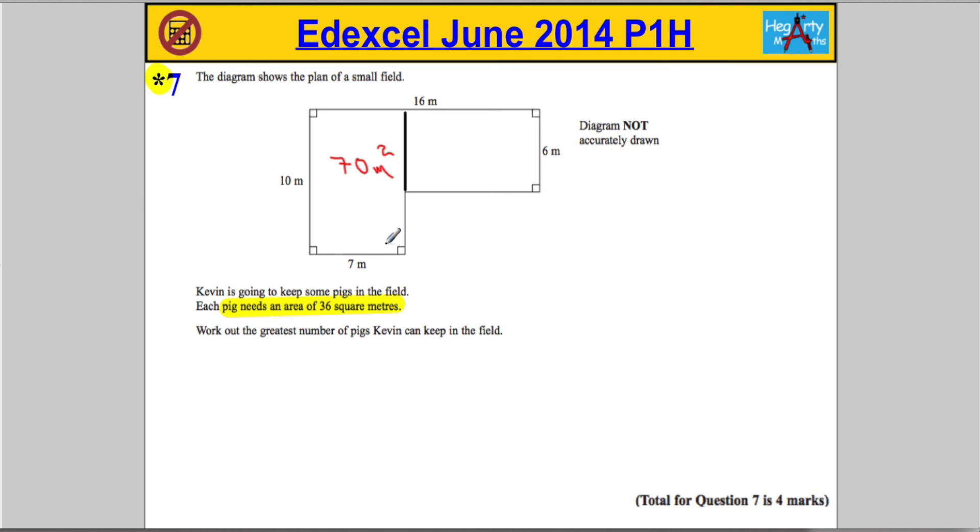The length of this rectangle here, well, if that side is 7 and that's 16, this must be 9 metres. So 9 times 6 equals 54. So this rectangle here is 54 metres squared.